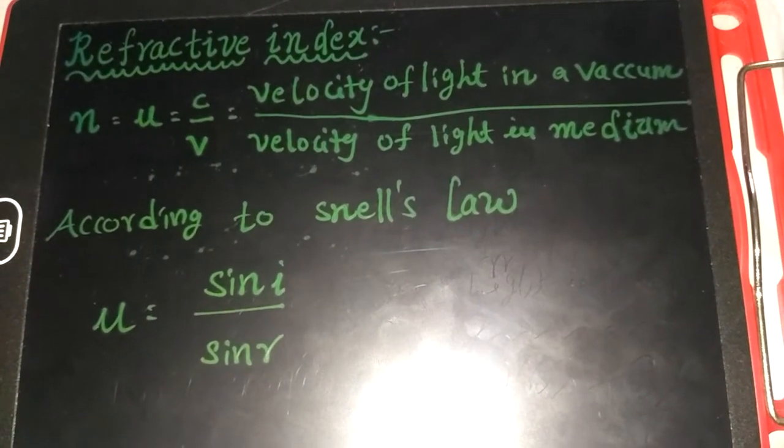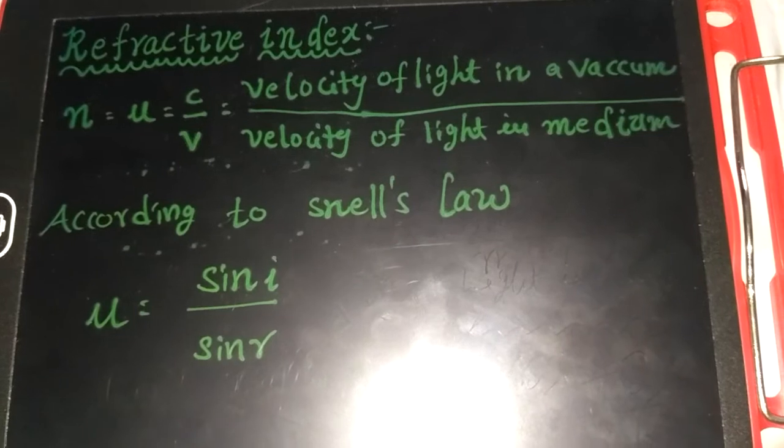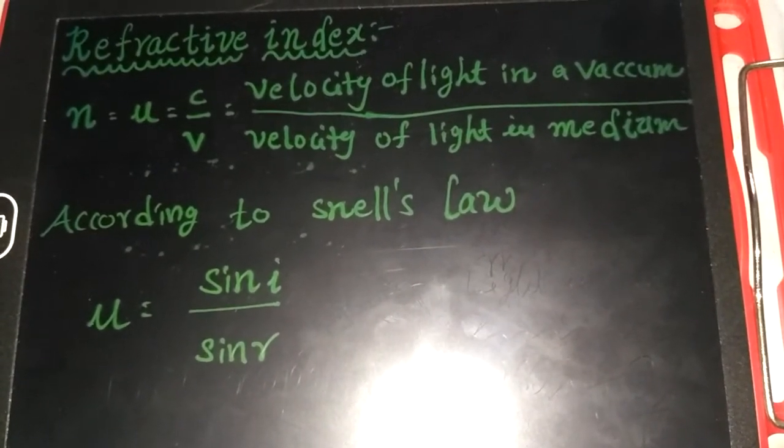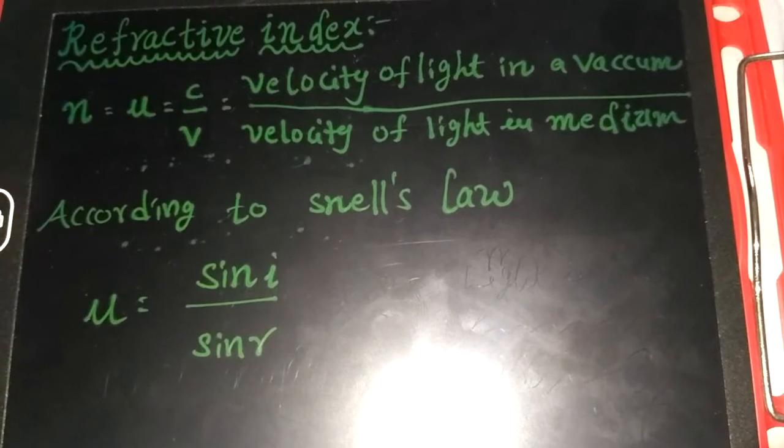Refractive index. Refractive index describes how fast the light travels in a medium. The refractive index has two definitions.